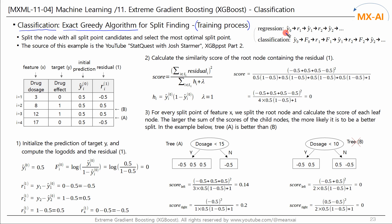For regression, we use the initial prediction to calculate the residuals and learn the residuals to estimate the next prediction, repeating this process. However, for classification, as we saw in GBM, we use the initial prediction to compute the initial log odds F0 and the residuals R. We then use these residuals to estimate the new log odds, and then convert the log odds values into probabilities, repeating this process.